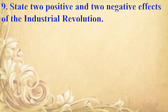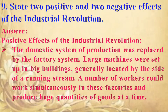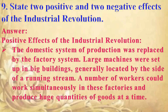State two positive and two negative effects of the Industrial Revolution. Answer — Positive effects: the domestic system of production was replaced by the factory system. Large machines were set up in big buildings generally located by the side of a running river. A number of workers could work simultaneously in these factories and produce huge quantities of goods at a time.